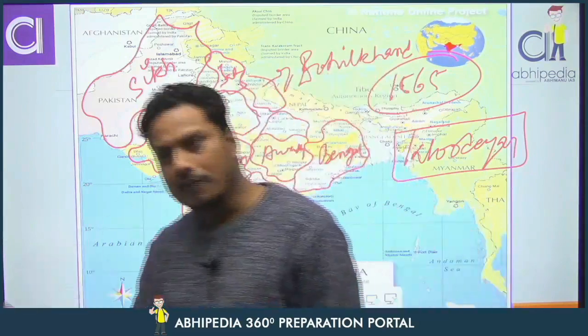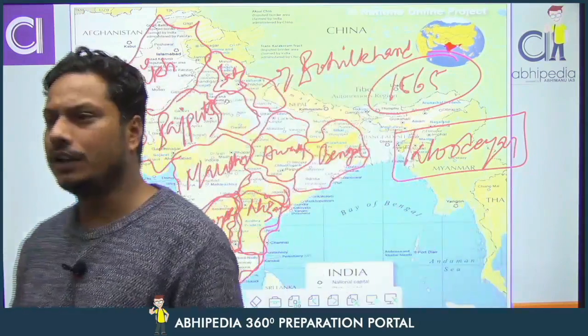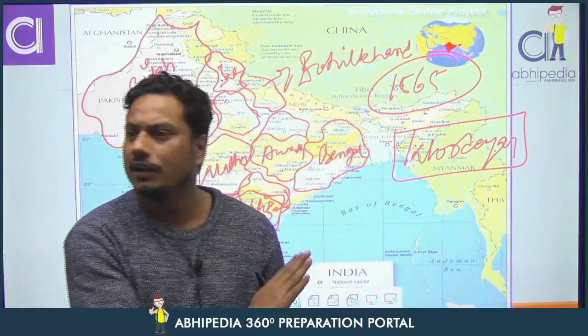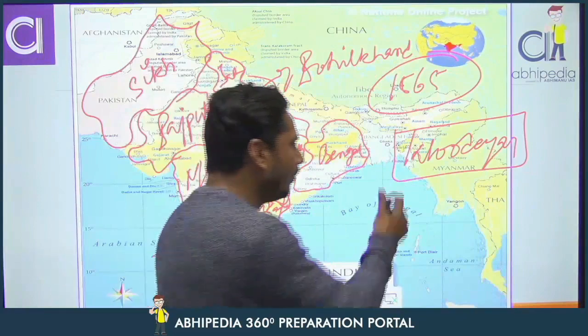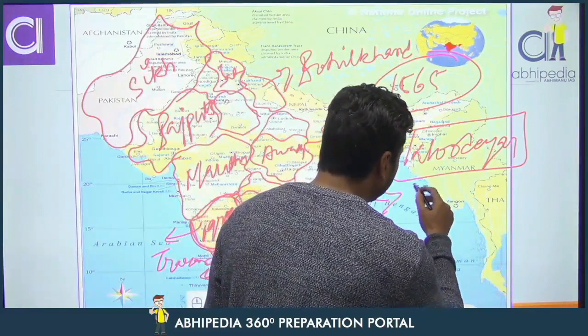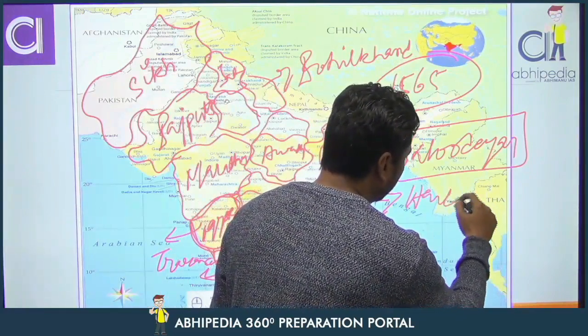When the Vijayanagar Empire disintegrated, they were ruling the Wodeyar dynasty here. But when the Wodeyars were ruling, the commander-in-chief was Hyder Ali.